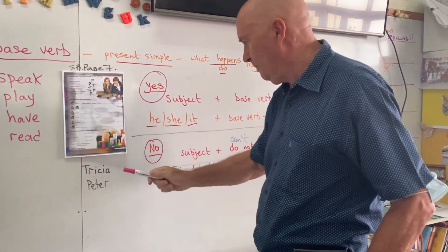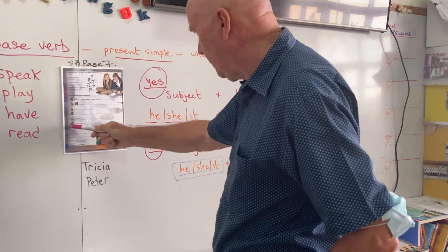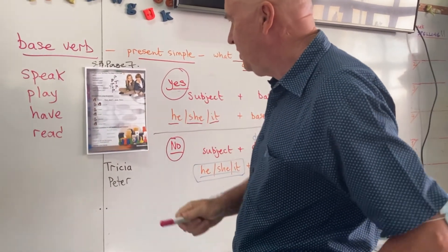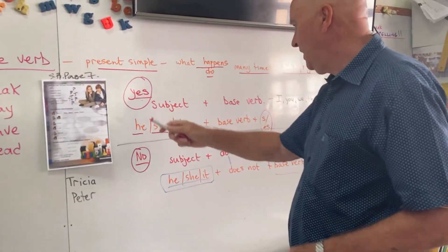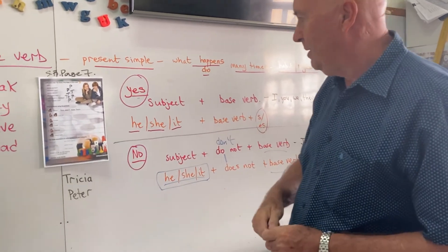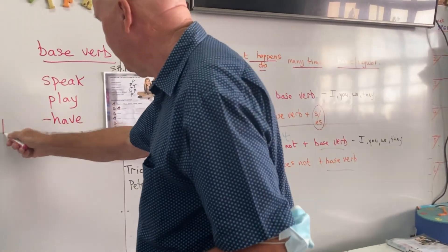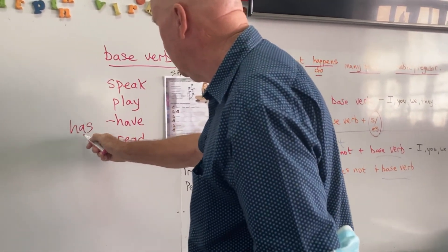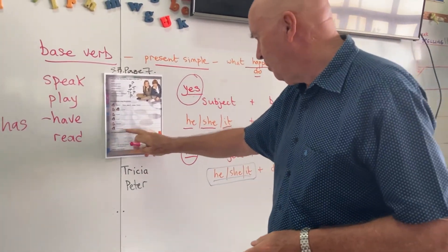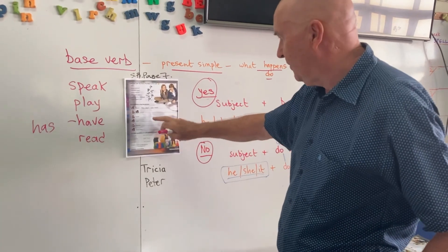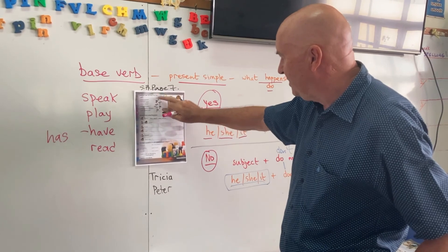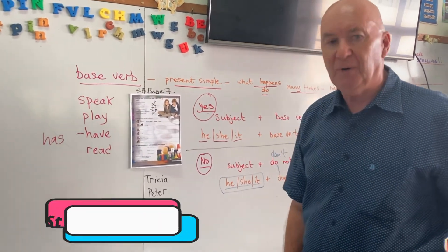Trisha does not speak Spanish — same as number one, isn't it? And the last one: Peter, brown eyes. The answer is yes. The subject is he — Peter — so we change the base verb. The base verb 'have', if the subject is he, becomes 'has'. Peter has brown eyes. See if you can do those live questions after listening to the video. Try those.